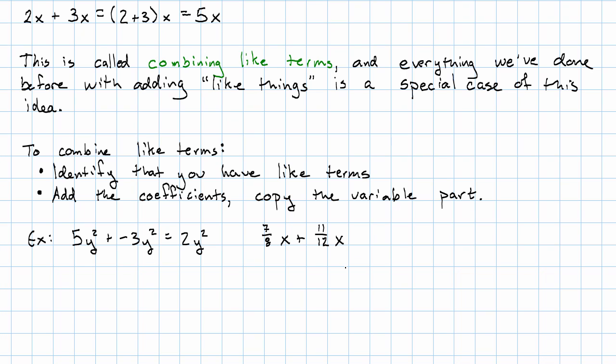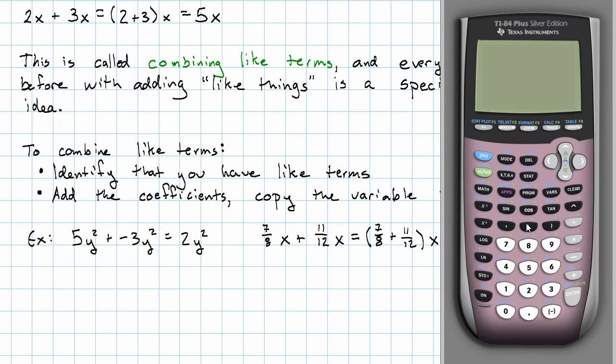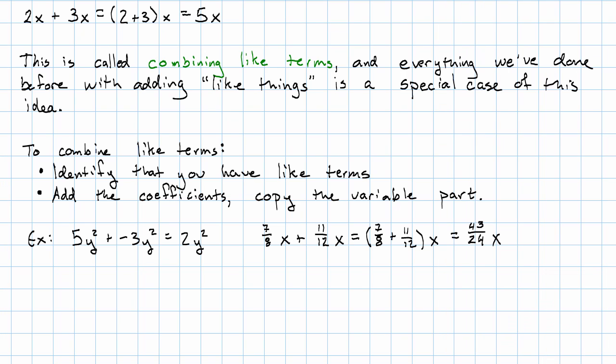7 eighths x plus 11 twelfths x is, well, I'm going to add the coefficients and leave the variable part alone. This addition is a little harder, I might want to use my calculator. I have 7 eighths plus 11 twelfths, and let's make that a fraction, 43 twenty-fourths. Remember 43 twenty-fourths is a perfectly good number, makes a perfectly good coefficient.